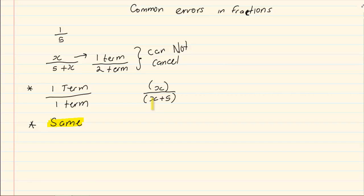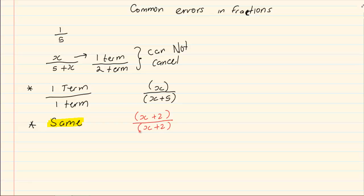So to cancel, we need to have the following conditions met: one term over one term and it must be the same. If I am given x plus 2 over x plus 2 — when I put it in brackets it becomes one term, and they are exactly the same. So they can cancel and give me 1.